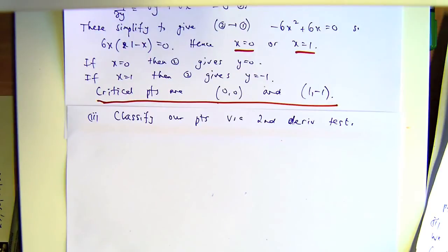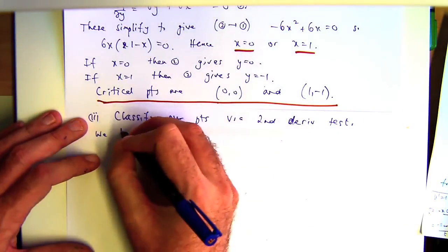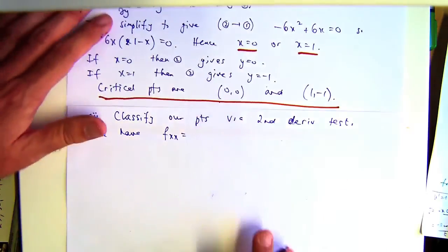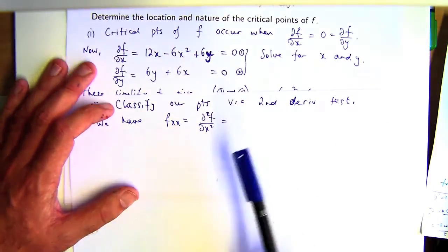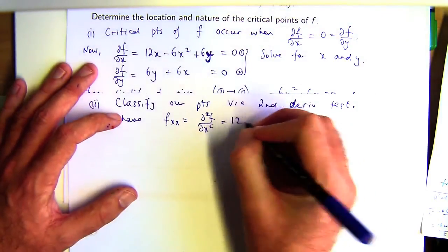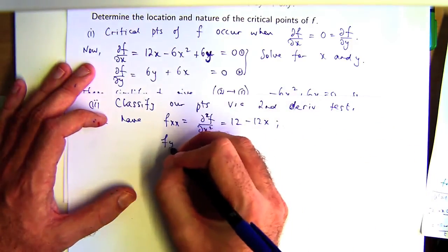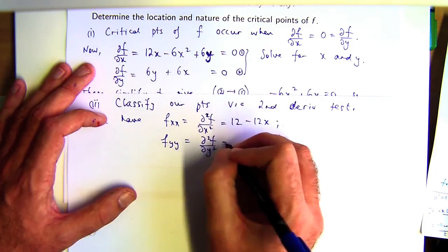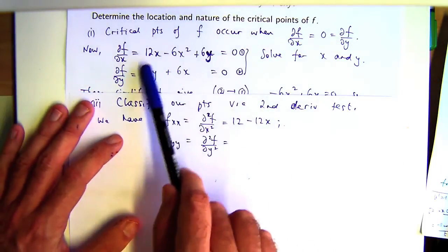With the second derivative test, you would think you need a second derivative. Yes, you do. So in part one, we only calculated the first derivatives. Let's calculate the second derivatives. By this I mean the second order derivative of f with respect to x. So if I go up here and differentiate with respect to x, I'm going to get a 12 there, I'm going to get a minus 12x there, and that's it. If I calculate the second partials with respect to y, going from that derivative and differentiating with respect to y, that'll become 6, that'll become 0.